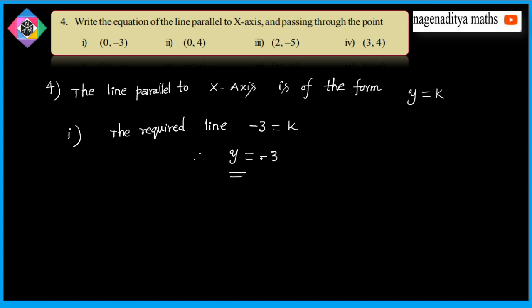The second question: the line is parallel to x-axis, so y is equal to k form. The k-value is 4. Therefore, the required line is y is equal to 4.